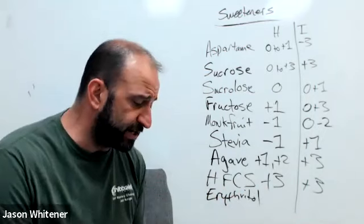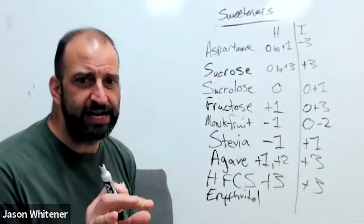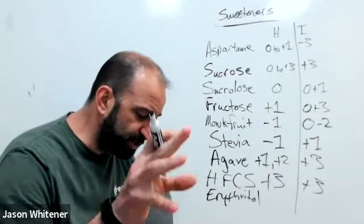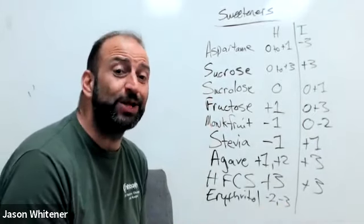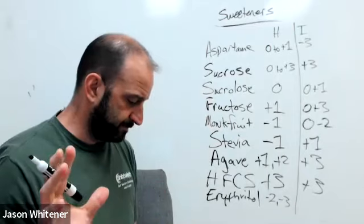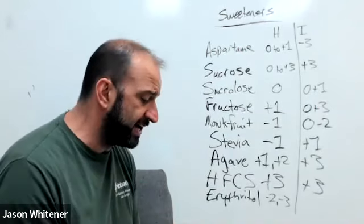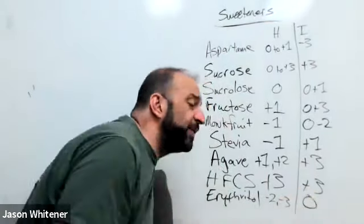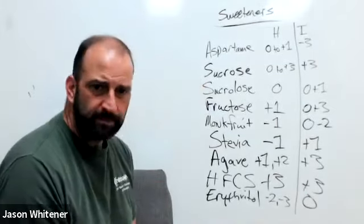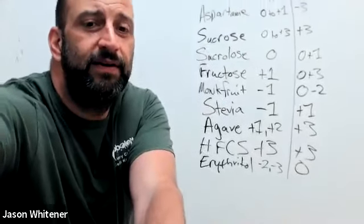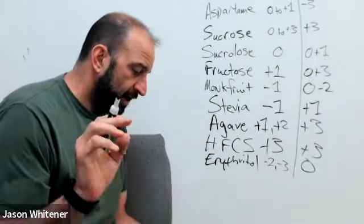Erythritol. Erythritol is called Swerve. Have you ever had Swerve? Swerve is pretty good. Swerve is a fibery sweetener. So there are some good aspects to erythritol. We're going to go with negative two to negative three on the health meter because of that fibery aspect. Now, Swerve is not as sweet as some sweeteners, so you might have to have a little bit more Swerve in order to make it a sweeter thing. However, we're going to go with a zero on the insulin response.